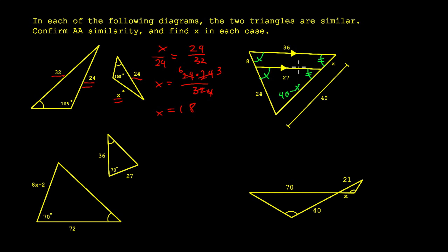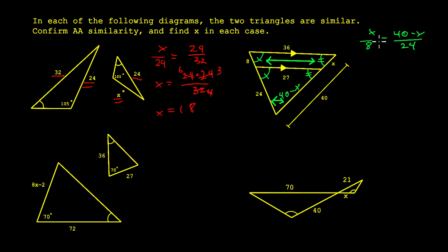There are two ways to attack this problem. The first is to recognize we have two parallel lines and two transversals to that same set of parallel lines. Using that approach: X over 8 equals 40 minus X over 24. Rearranging gives 24X equals 320 minus 8X. Moving the 8X over gives 32X equals 320, and then X equals 10.